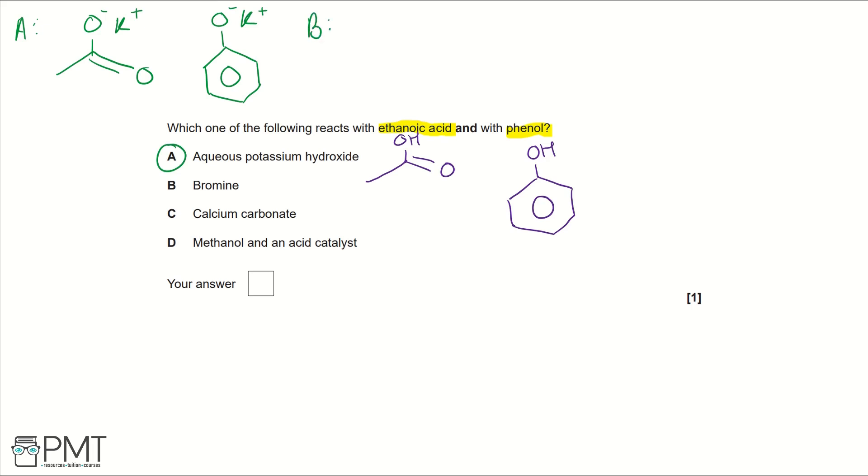Looking at B, bromine doesn't react with ethanoic acid, but it does react with phenol and will be tri-substituted if there's an excess of bromine, where it's substituted in the two, four, and six positions on the benzene ring. Here we've drawn our organic product for B, but it doesn't react with ethanoic acid, so it can't be our answer.